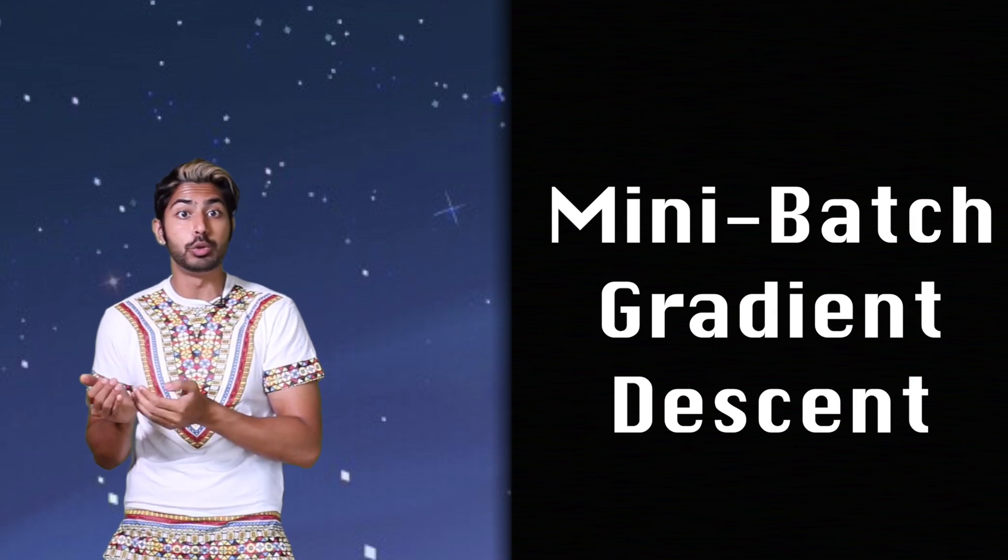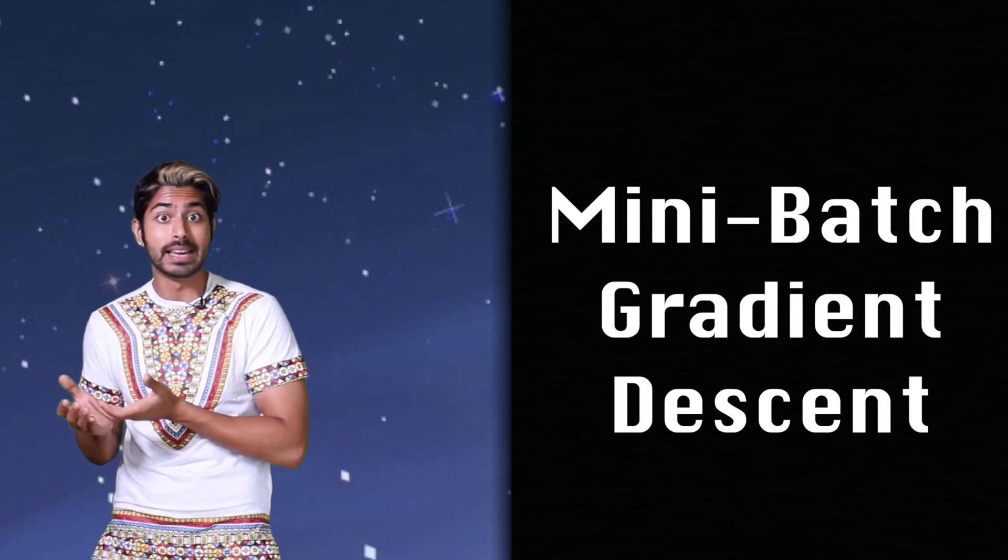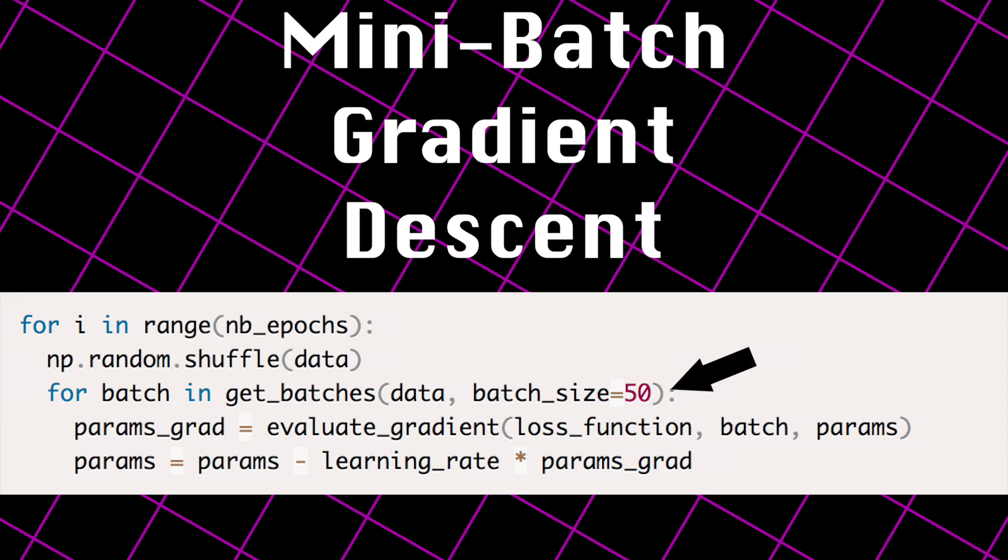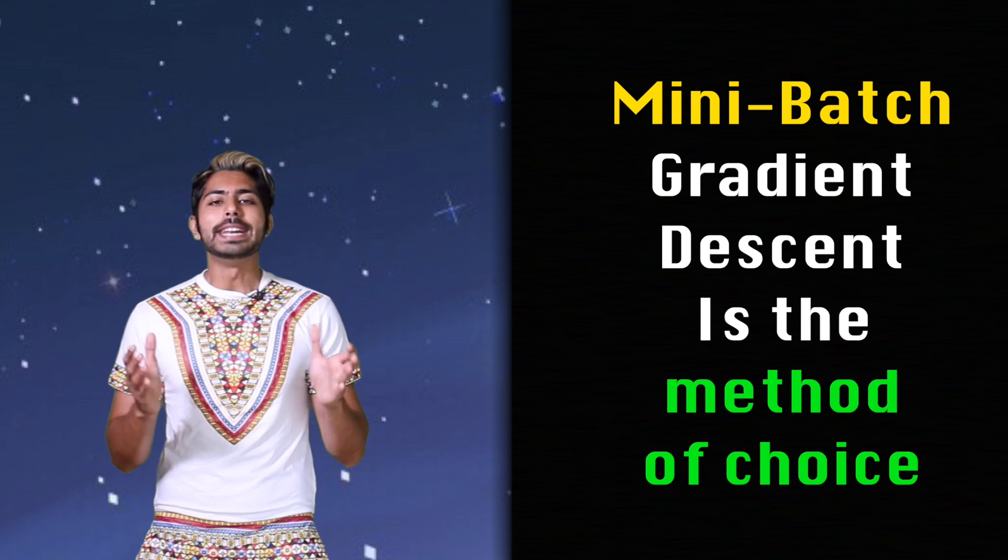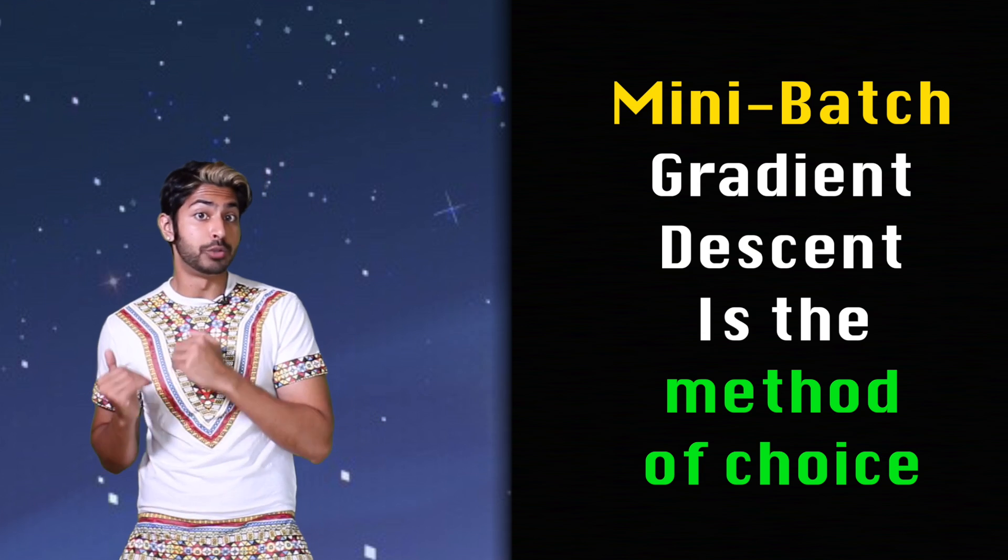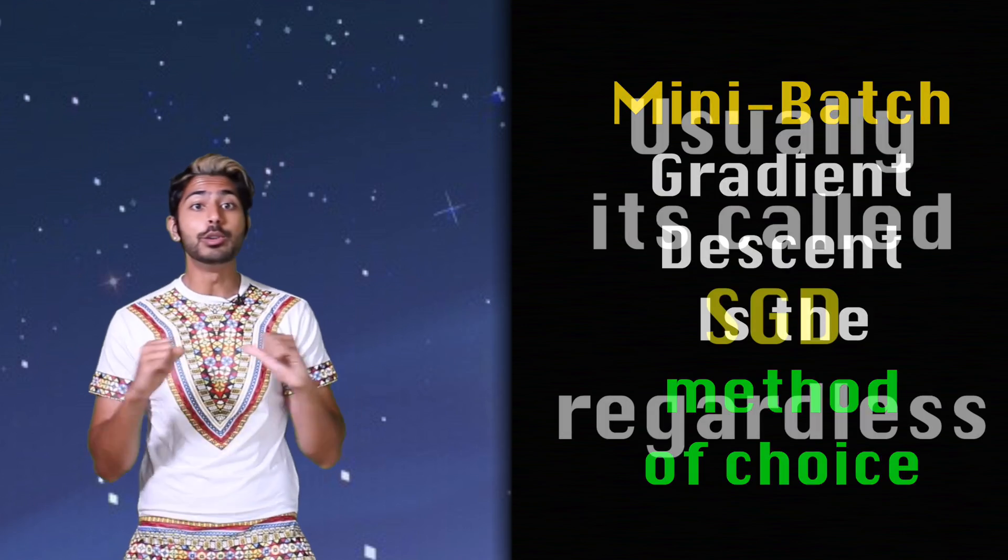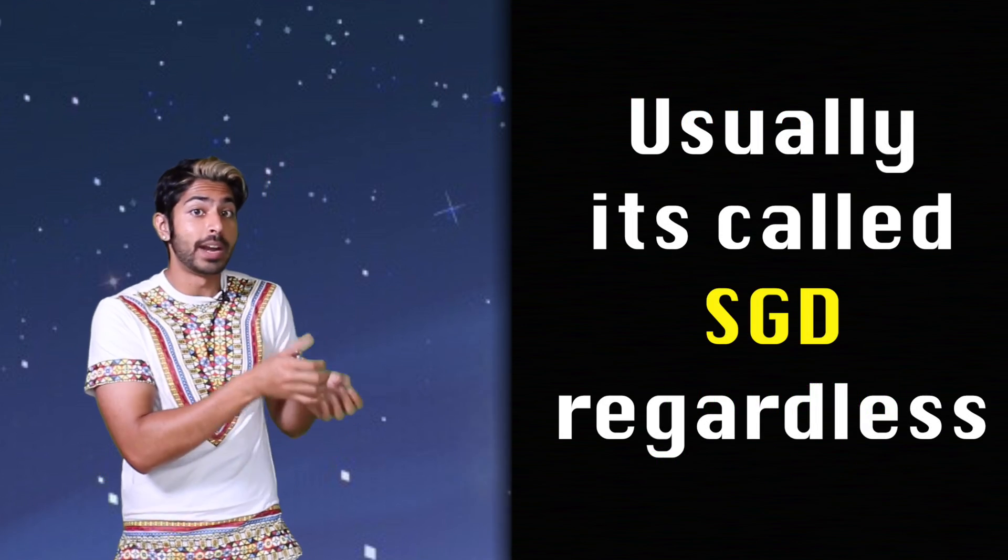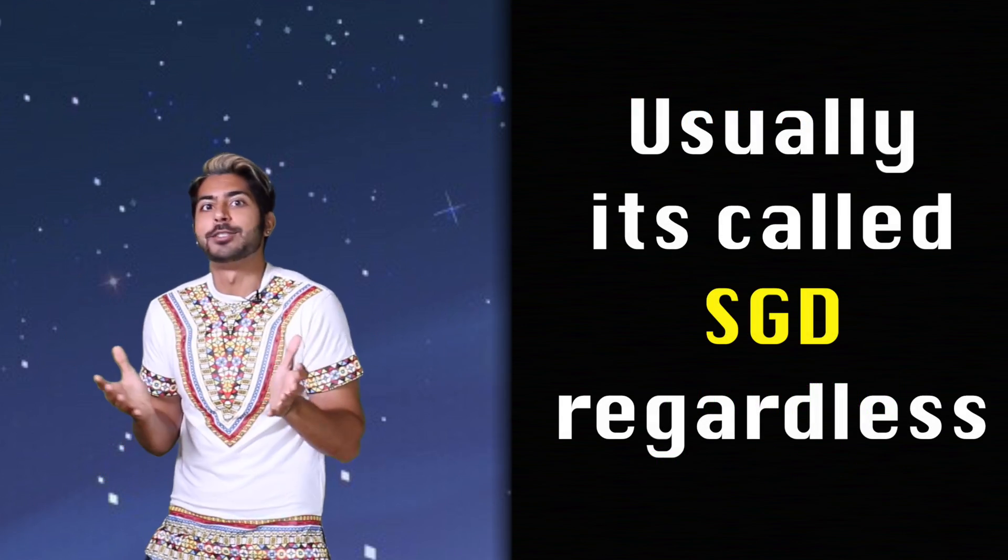So an improvement would be to use mini-batch gradient descent as it takes the best of both worlds by performing an update for every subset of training examples that we can decide the size of. Training in mini-batches is usually the method of choice for training neural networks and we usually use the term stochastic gradient descent even when mini-batches are used.